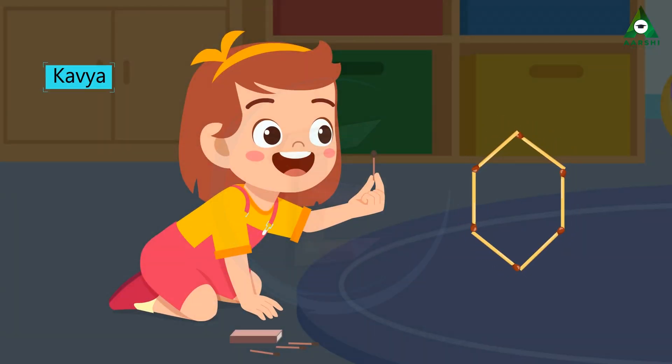Kavya has made a shape, it is a closed shape. A polygon is a closed shape of any given figure.